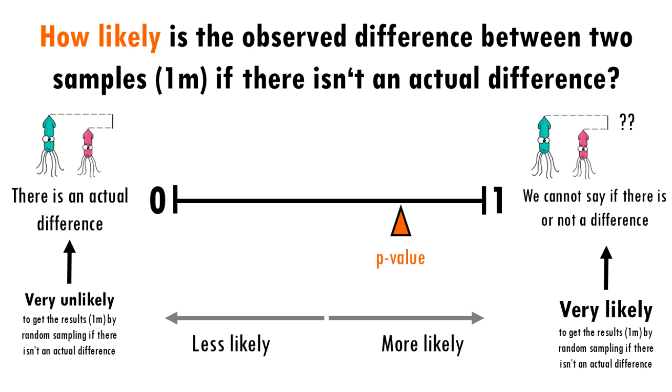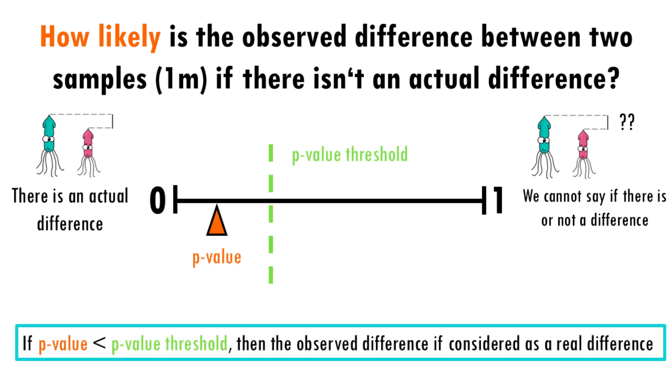But how do you decide what is a small or a big p-value? You should decide the threshold in advance. In other words, at which smallest accepted value of p, the difference will be considered a real difference. We will talk about that in just a minute.